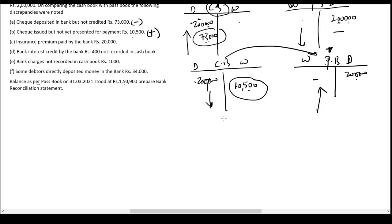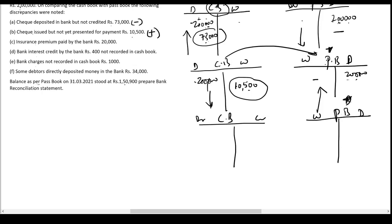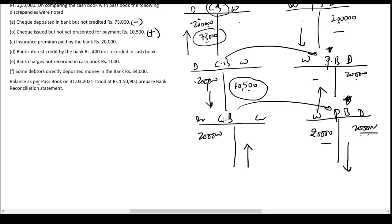Insurance premium paid by the bank — 20,000. Based on standing instructions, the bank made this payment on our behalf, so it is a withdrawal debited in the passbook. The passbook balance reduces while the cash book balance is higher. To make the cash book equal to the passbook, I have to reduce the cash book balance by 20,000 — so I'll write less here.